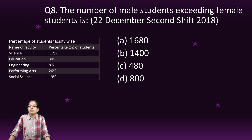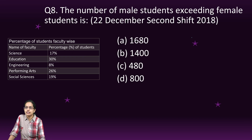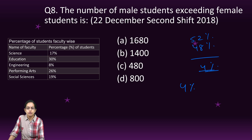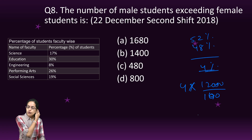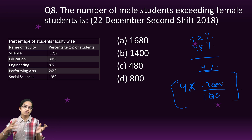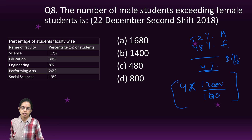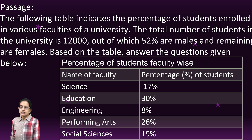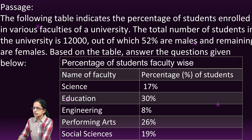Next question: by how much do male students exceed female students? Since males are 52% and females are 48%, the difference is 4%. So 4% of 12,000 = 4 × 12,000 ÷ 100 = 480. That is the number of additional male candidates compared to female candidates.